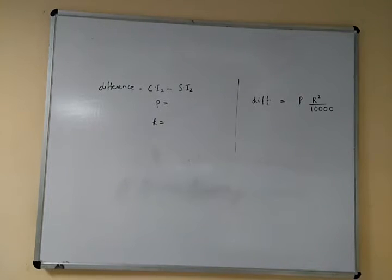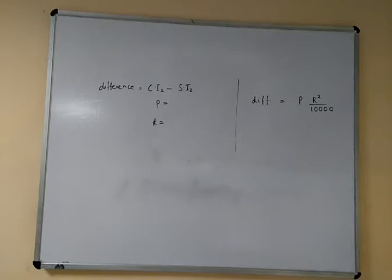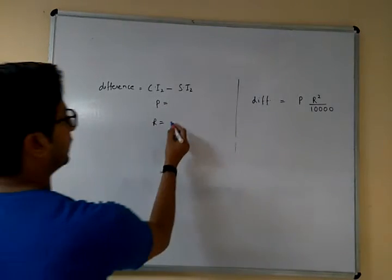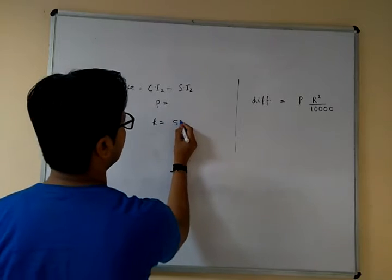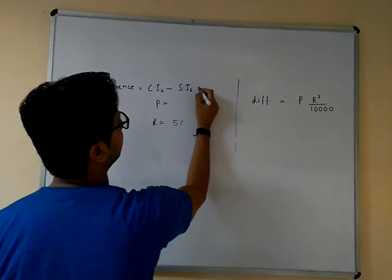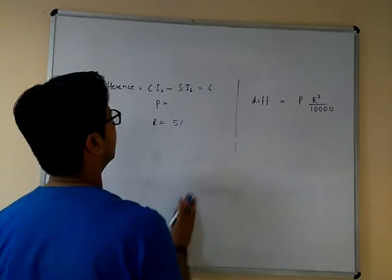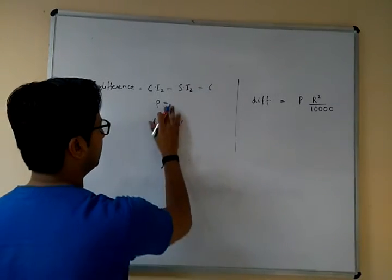If the difference between SI and CI for 2 years on a sum of money lent at 5% is 6, then what is the sum? The rate is 5% and the difference is 6. We need to find the principal.